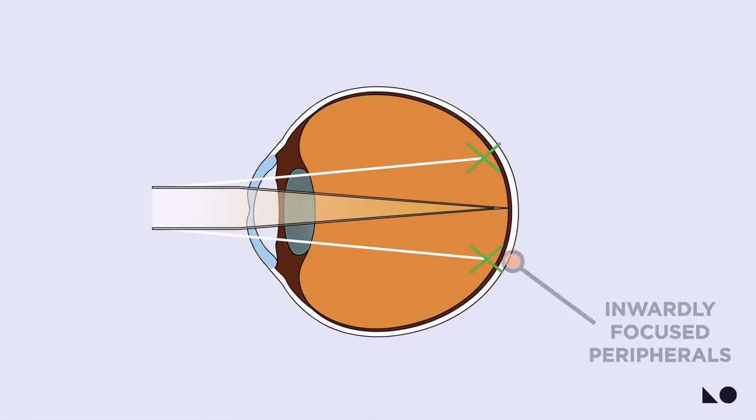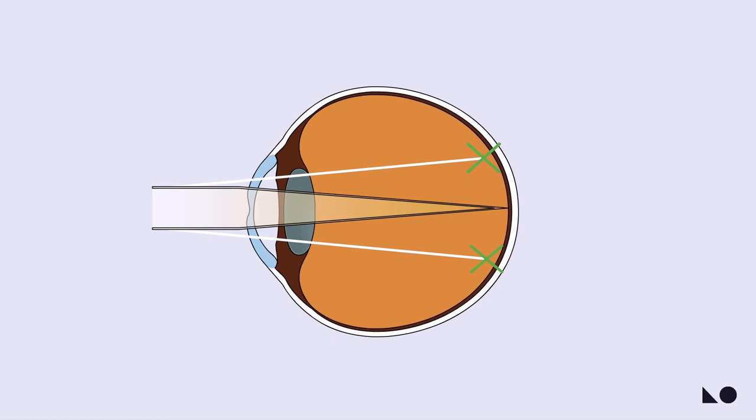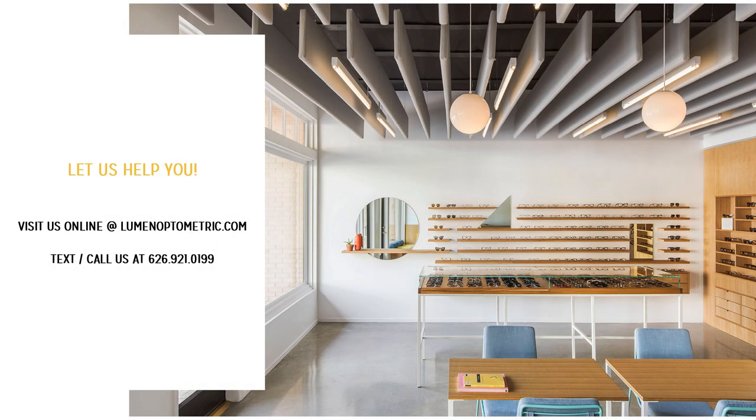Because the peripheral vision is focused inside of the eye, it reduces the stimulus for accelerated growth. And without the stimulus for growth, the eye will retain a smaller shape and your child's eyes will remain healthier for life.